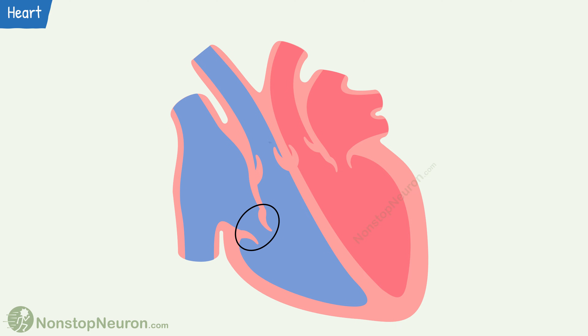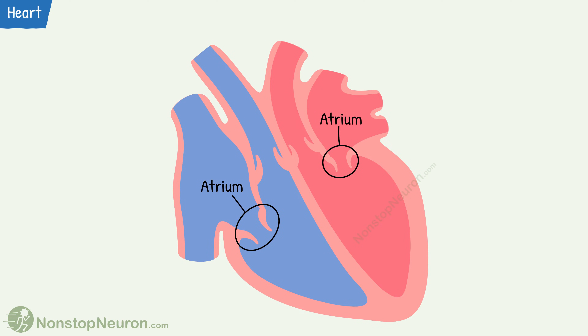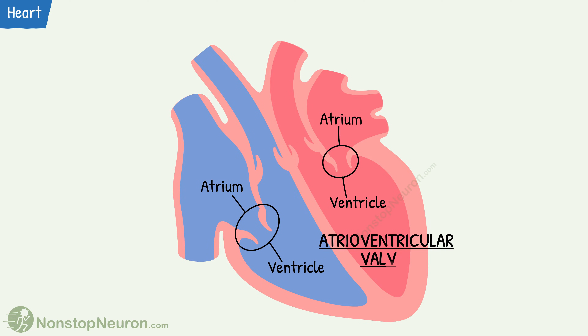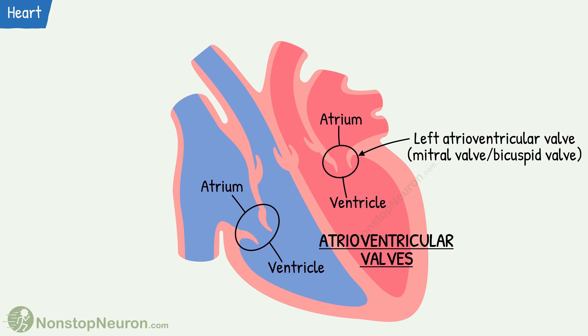There are four valves in the heart. Two valves are in between atria and ventricles, called atrioventricular valves. The left atrioventricular valve is otherwise known as the mitral valve or bicuspid valve — it is made up of two cusps. The right atrioventricular valve is known as the tricuspid valve and it is formed by three cusps.